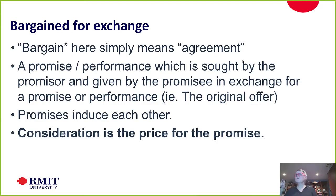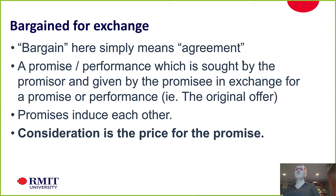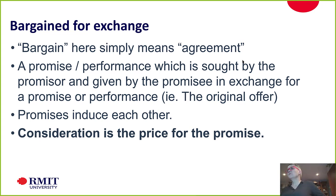A bargain here — I'm not talking about bargaining as in negotiating, and I'm not using it in terms of cheap. What I mean is bargain as in agreement, reaching agreement. A promise or performance sought by the promisor and given by the promisee in exchange for a promise or performance is the original offer. In a bilateral contract, both parties are promisors and each must promise something, and each are promisees. The promises induce each other — I will pay you $10 if you mow the grass; I will mow the grass if you pay me $10. So the consideration, which moves both ways, is the price for the promise made.